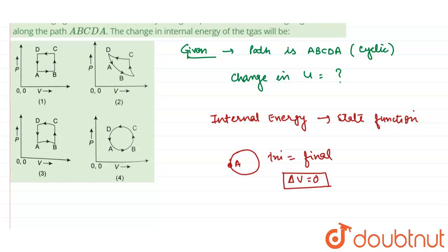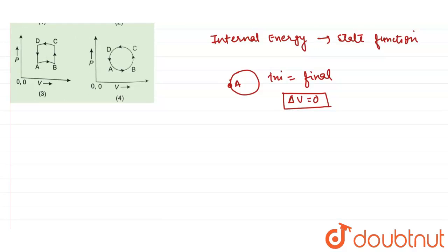Zero. Okay, so now in the diagrams we can also see that all the four diagrams are cyclic process, and in this cyclic process the internal energy is always zero because for any cyclic process...